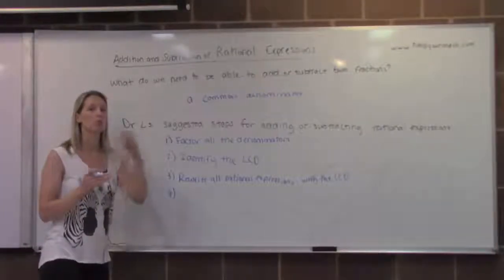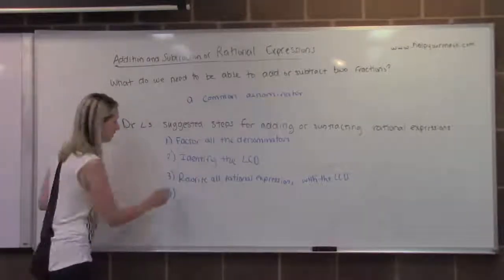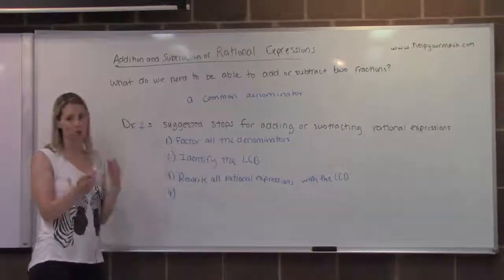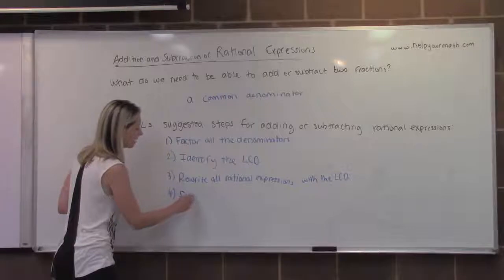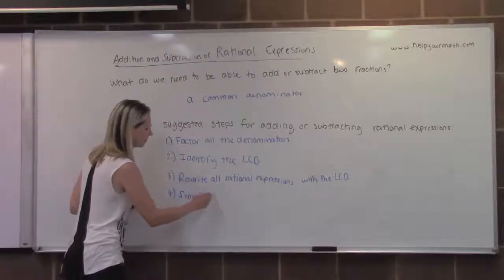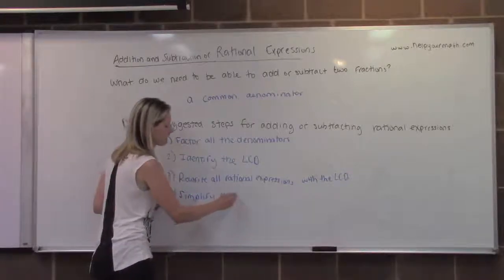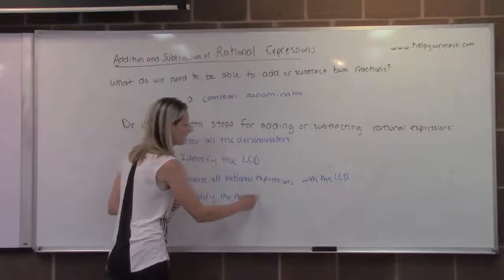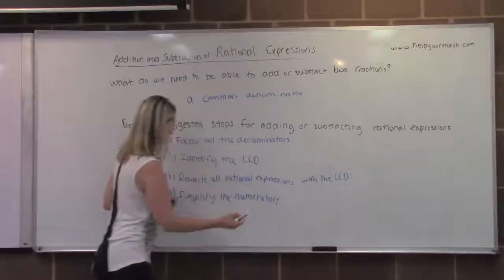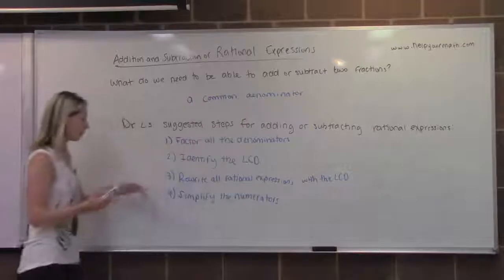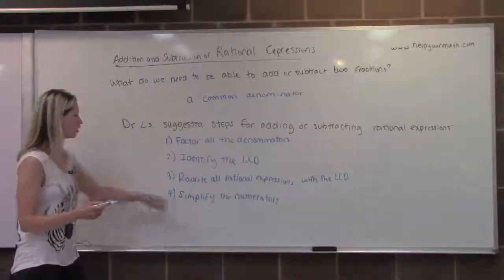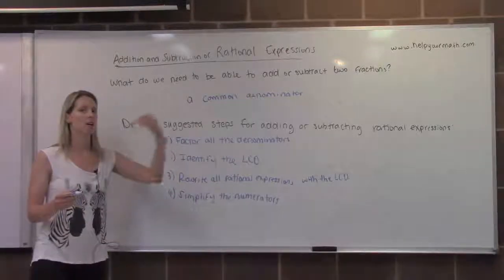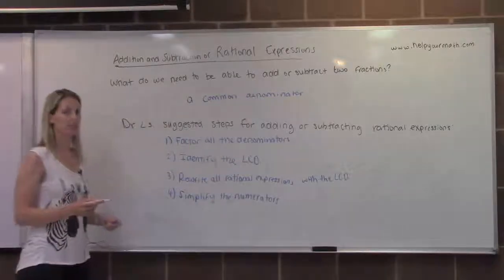What you do want to do is you do need to simplify the numerators now. So the numerators might have these additional pieces being multiplied to them. So we want to simplify the numerators. That means applying the distributive property. Once the numerators are simplified, now we want to combine like terms in the numerator. So this includes distributing and simplifying.